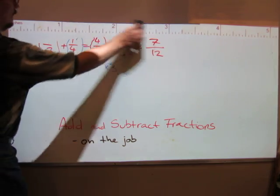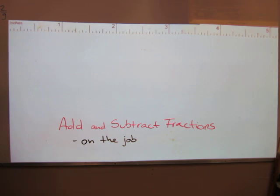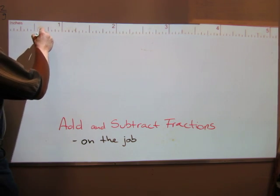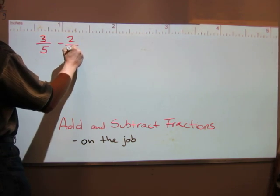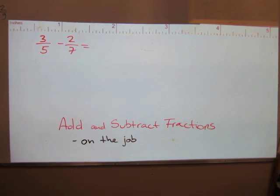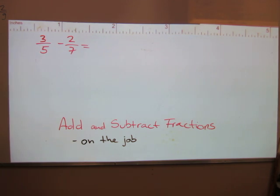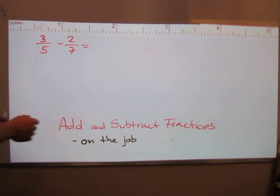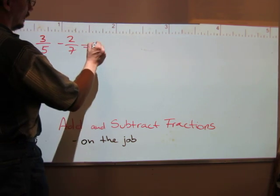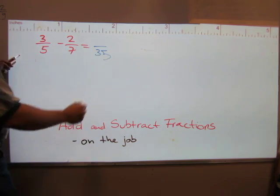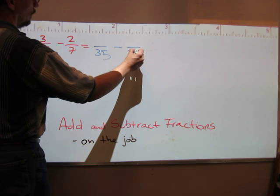Now let's look at a fraction subtraction — really fast. How about 3 fifths minus 2 sevenths? These two fractions are also incompatible; they have different denominators and cannot be subtracted as-is. They must have the same denominator. The fastest way is to multiply them together: 5 times 7 is 35, so 35 is the new denominator for both.